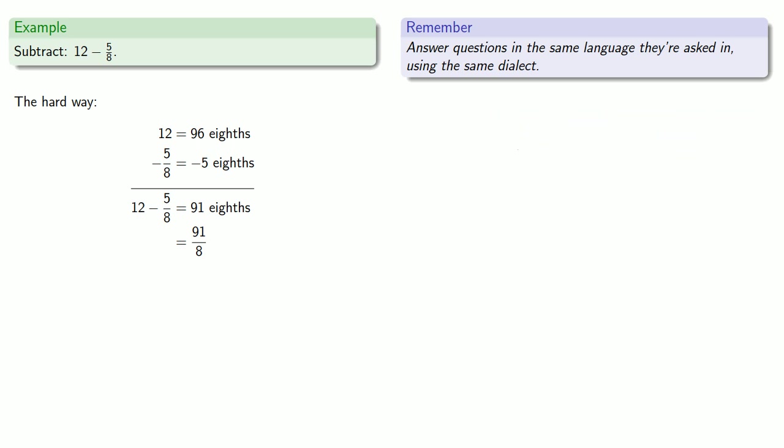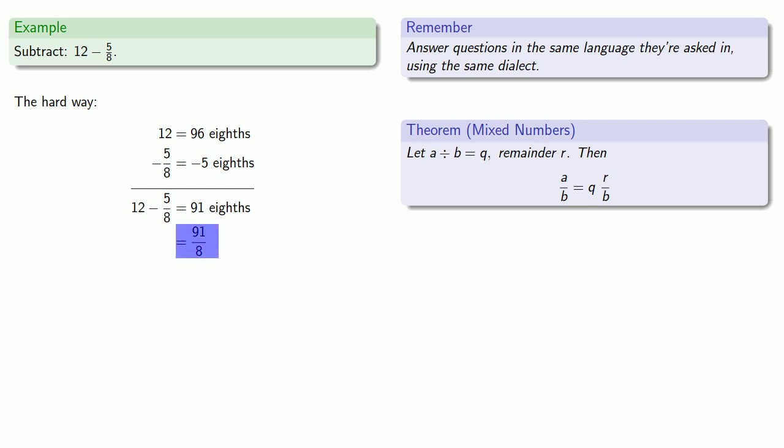Now, in order to do that, we have to go back to our mixed number theorem. Let a divided by b equals q with remainder r. Then a/b is q and r/b. So if I want to convert 91/8 into a mixed number, I have to divide 91 by 8. And that gives me 11 remainder 3, and so my mixed number is 11 and 3/8.